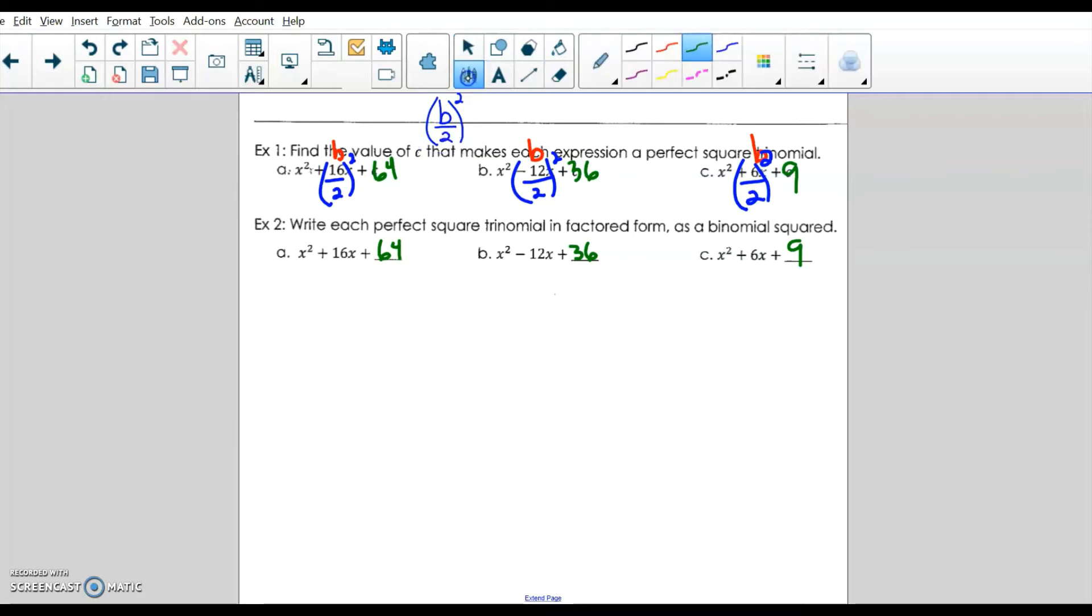In the next step, in this next example, what they are asking us to do is now write this as a binomial squared. So we want each one of these trinomials written as a binomial being squared. And so the quick technique for that is bring down the variable x, bring down the sign plus, and what was half of the B term? So half of the B term was 8. And so that came from the 16, we took half of the 16. And so here on the B, x minus 6. The x comes down, the sign comes down, and we're taking half of 6. So on the last one would be x plus 3. So that's how we write the binomial squared from the perfect square trinomial.